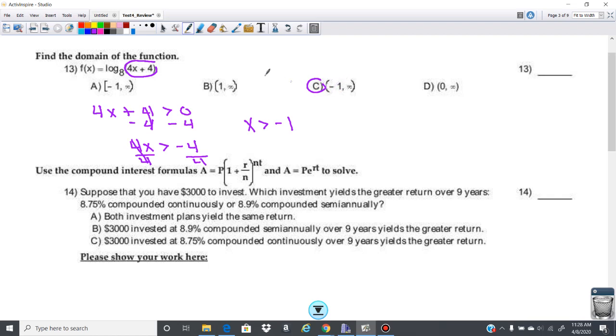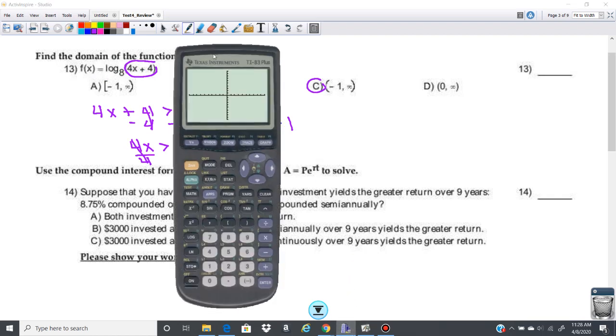Okay, and the reason why is if I plug negative 1 into this function, 4 times negative 1 is negative 4, plus 4 would give me 0. That would give me, well, actually that would give me 1 here, so let's take a look at this function so that we can confirm this.